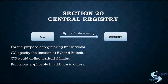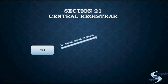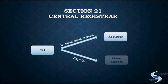Once you have a registry established for registering the transactions of securitization and reconstruction and also for the enforcement of security interest, you also need a registrar. Under Section 21 we talk about the Central Registrar. The central government may by notification appoint any person to be the registrar under that registry. They may also appoint some other officers to assist the registrar for the proper functioning of the entire registry. All such appointments would be done by the central government itself. The registrar and the other officers sitting in the Central Registry would register the transactions of securitization and reconstruction and also the enforcement of security interest.